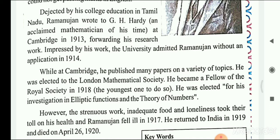While at Cambridge, he published many papers on a variety of topics. He was elected to the London Mathematical Society and became a Fellow of the Royal Society in 1918, the youngest one to do so. He was elected for his investigation in elliptic functions and the theory of numbers. After going to Cambridge, he made various papers on various topics and was the youngest to be part of the Royal Society in 1918.